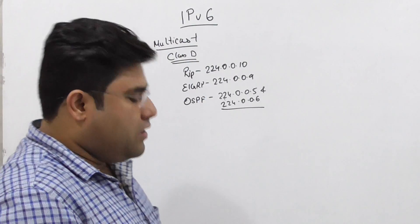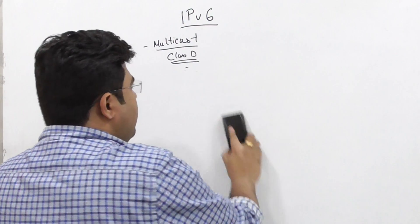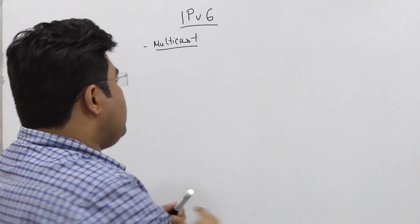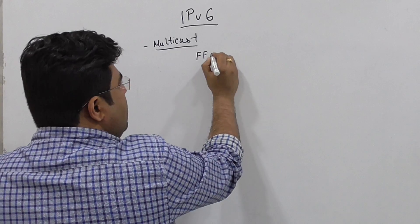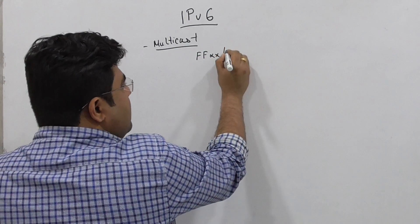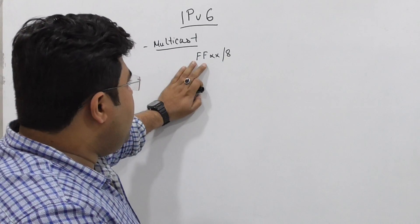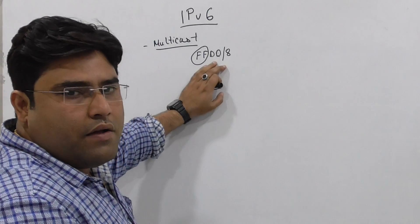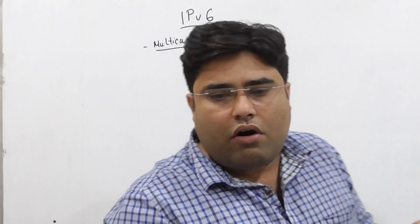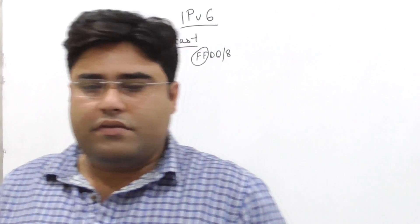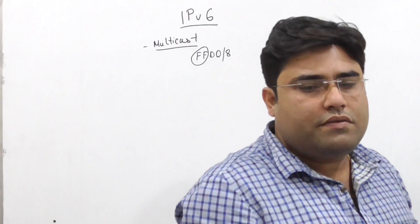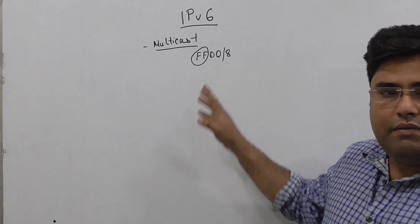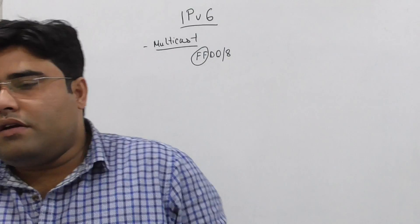When you look at IPv6 Multicast, any address starting with FF is a Multicast IP. All Multicast IPv6 addresses start with FF. This is the key identifier for IPv6 Multicast.